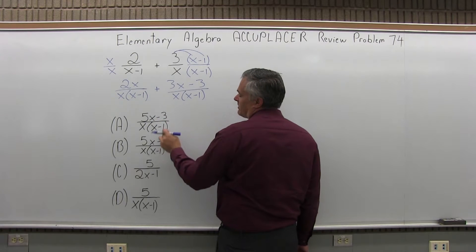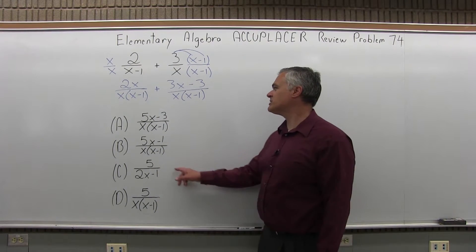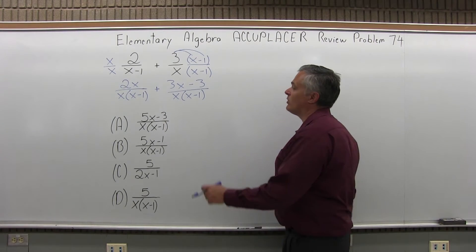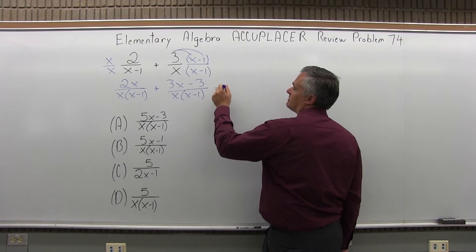I could multiply that out, but my options all seem to have that in the bottom. Well, not option C, but most of them do. So I'm not going to multiply it out, or I only will if I can't match one of my available options.